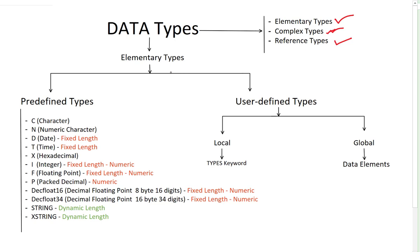Elementary types can again be divided into two things: predefined types and user-defined types. Predefined types exist in the SAP system kernel so you don't need to separately define them — whenever you are creating a data object you can refer to these predefined types. User-defined types are something you can define in your programs, either locally within the program or centrally in the system so that any program can use them. In this video we will talk about predefined types; in the next video we will talk about user-defined types.